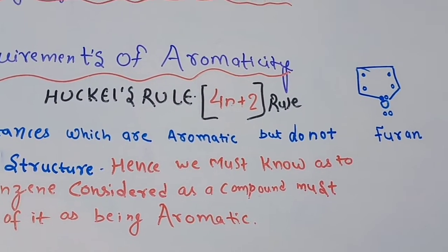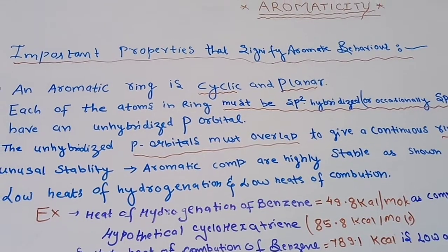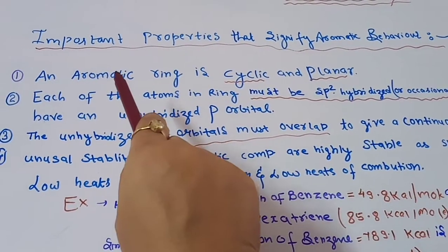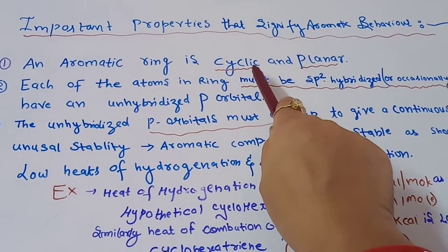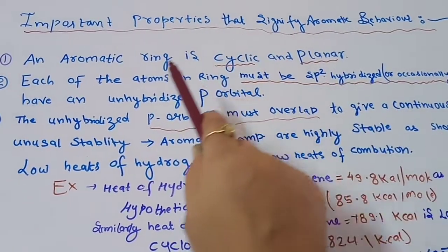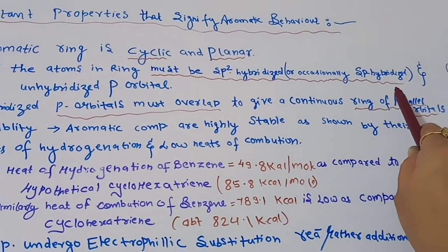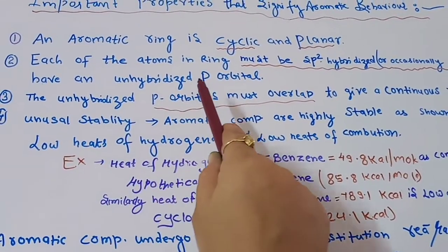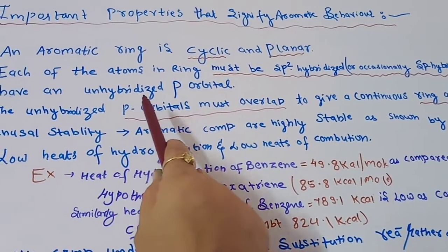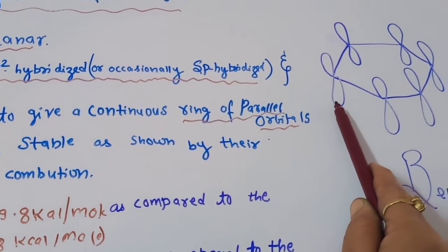So how can we define that a compound is aromatic or non-aromatic? For example, if we see the structure of furan, it does not have a benzene ring, yet it is an aromatic compound. So what makes it aromatic? The first important property: an aromatic ring is cyclic and planar. The ring should not be open, and all carbon atoms must lie in one plane. Second, each atom in the ring must be sp2 hybridized and must have an unhybridized p orbital.